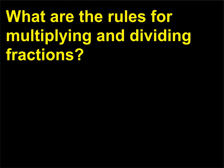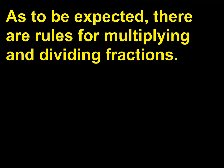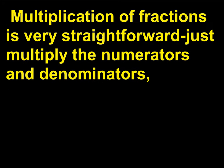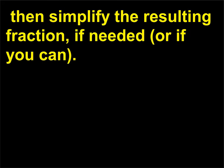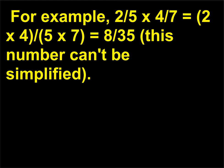What are the rules for multiplying and dividing fractions? There are rules for multiplying and dividing fractions. Multiplication of fractions is very straightforward — just multiply the numerators and denominators, then simplify the resulting fraction if needed. For example, 2/5 × 4/7 equals (2×4)/(5×7) equals 8/35 — this number can't be simplified.